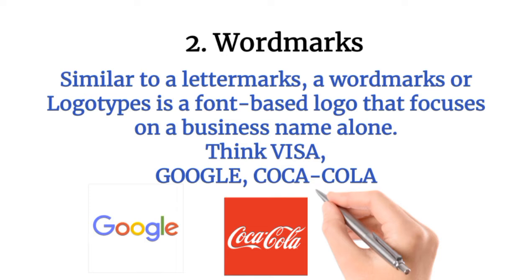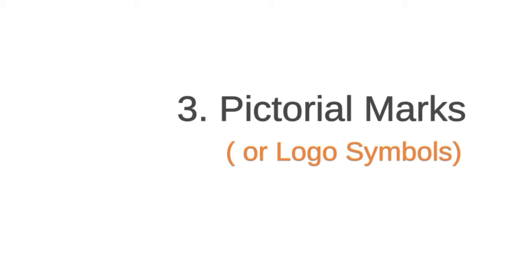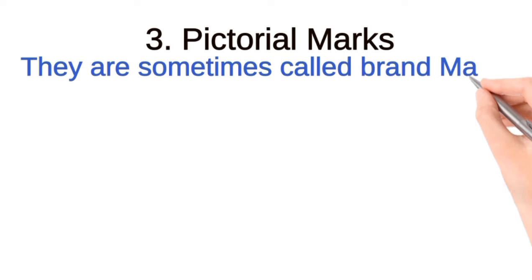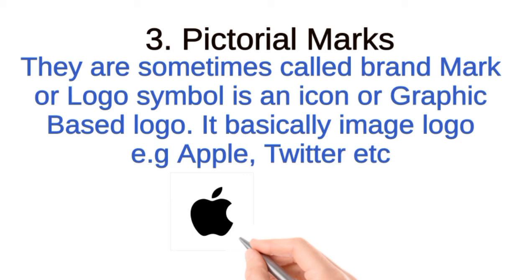The third type is pictorial marks, or logo symbols. These are sometimes called brand marks — an icon or graphic-based logo that is basically an image logo. Examples include Apple and Twitter; they only contain an image representing the company.